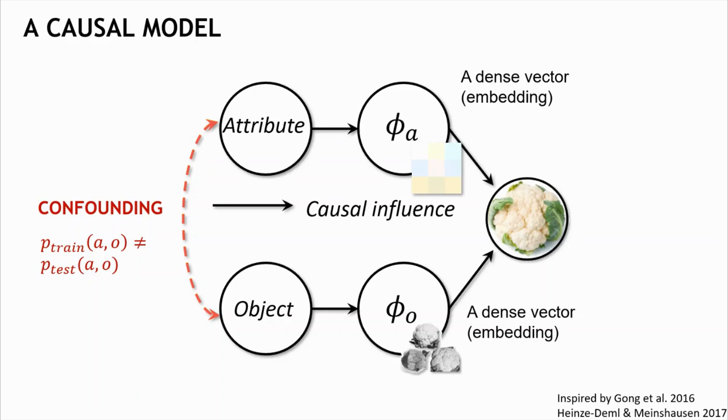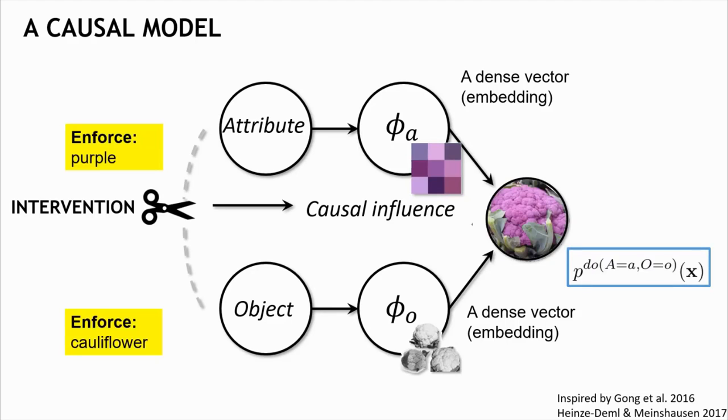This leads us to the concept of intervention, where something interferes with the causal graph that generates the training data, it overrides the edge, disentangles the attributes and objects, and enforces the physical mechanism to generate an image of a new composition. The distribution of such samples is called the interventional distribution.